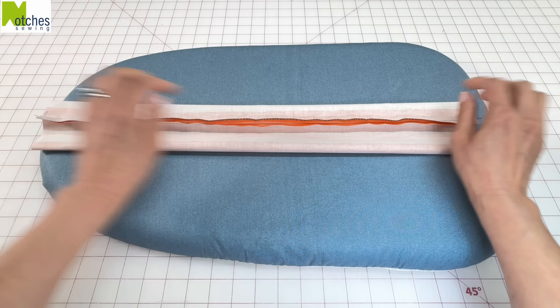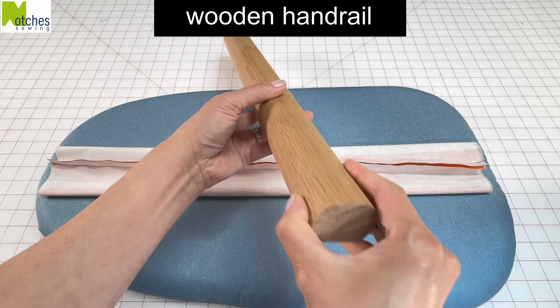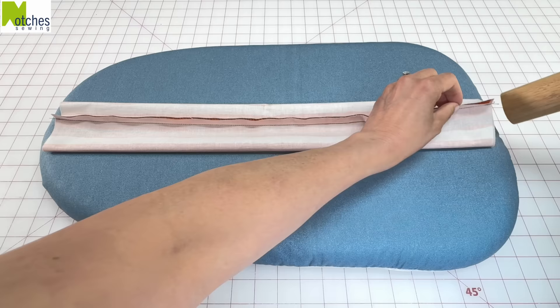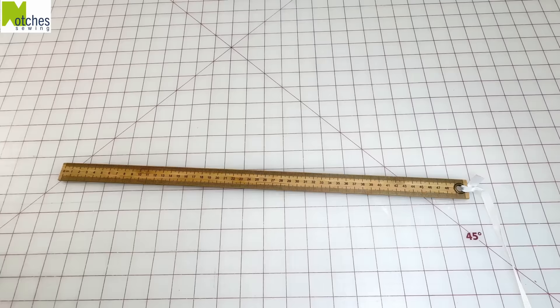If you need to press open the seam of a tube and you don't want to create creases on the sides, just put a rolling pin in between. What's even better if you can get it is a piece of handrail. It has that nice round top and a flat bottom. When you're done pressing, you can also use it as a clapper.